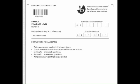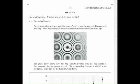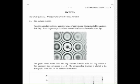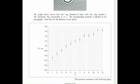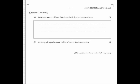Hello, this is Physics Standard Level Paper 2, May 2011, Time Zone 1. First, the data analysis question. Here's a graph, and we need to interpret the relationship from this graph. The first question asks for a piece of evidence that d is not proportional to n, and the second question asks us to draw the line of best fit. So let's do those together.